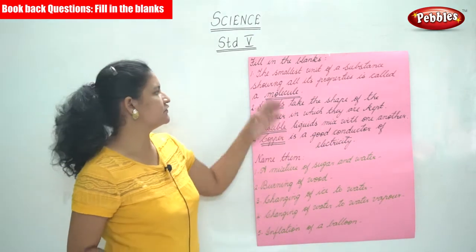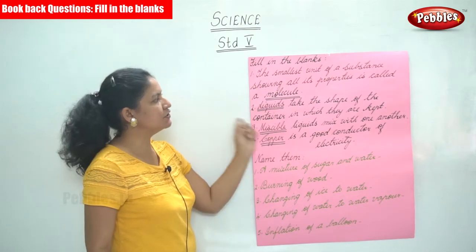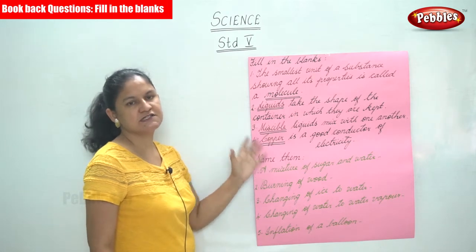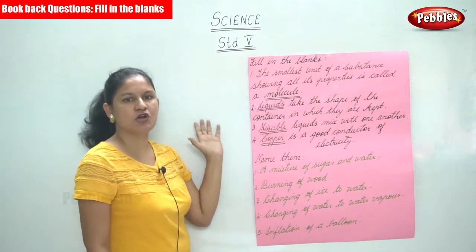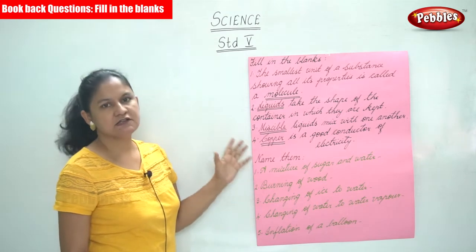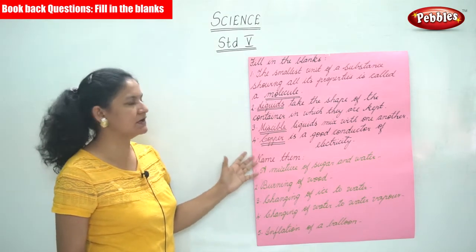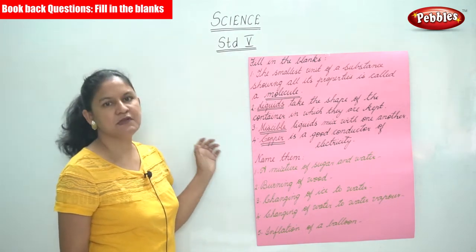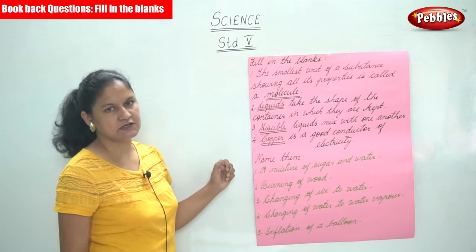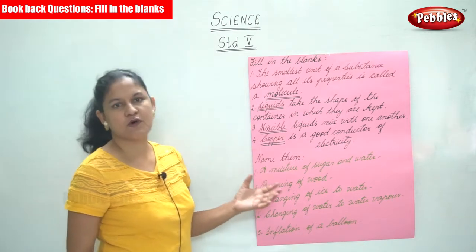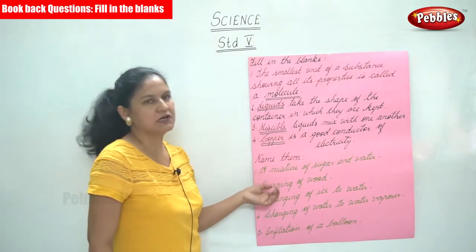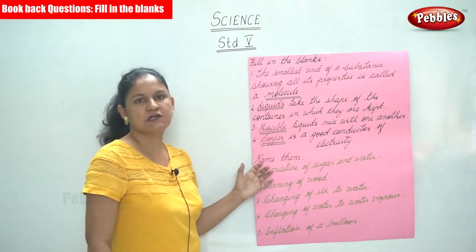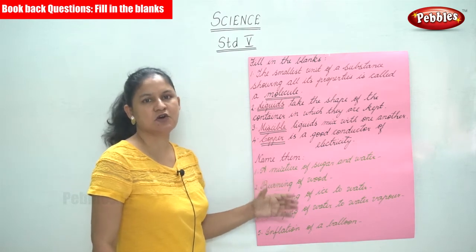So the fill in the blanks answers are: the smallest unit of a substance showing all its properties is called a molecule. Liquids take the shape of the container in which they are kept. Miscible liquids mix with one another. Copper is a good conductor of electricity.